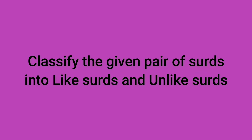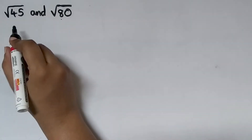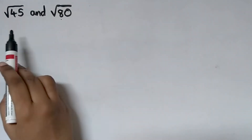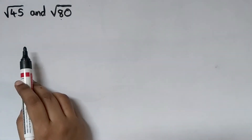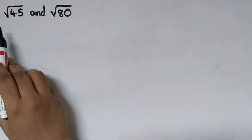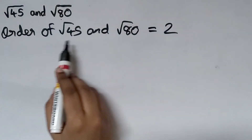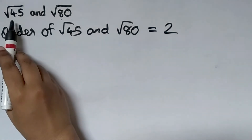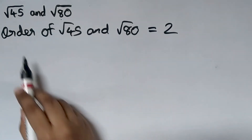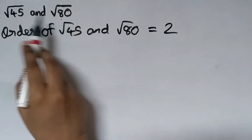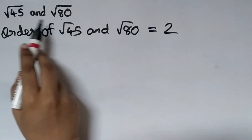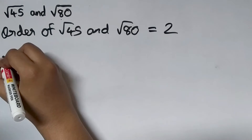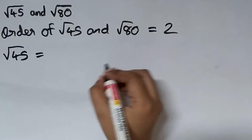Now we will solve some examples: classify the given pair of surds into like surds and unlike surds. First: 2 square root of 45 and square root of 80. We have to check whether these two surds are like surds or not. For like surds, the order should be same and the radicand should be same. Here the order of root 45 and root 80 is 2, so the order is same. The radicand is different — 45 and 80 — but we can simplify both surds.